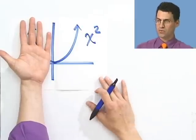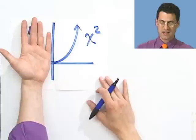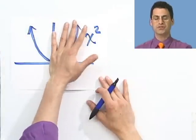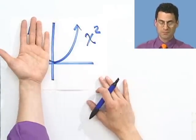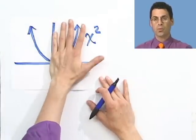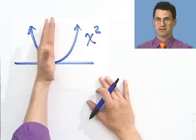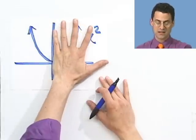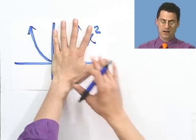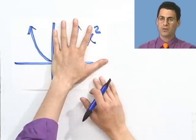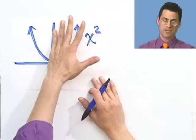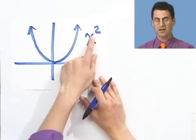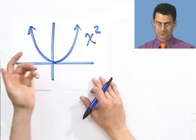In other words, we say that this has symmetry with respect to the y-axis, because whatever happens on the left-hand side of the y-axis, the symmetric thing happens on the right-hand side. For example, x squared is an even function.